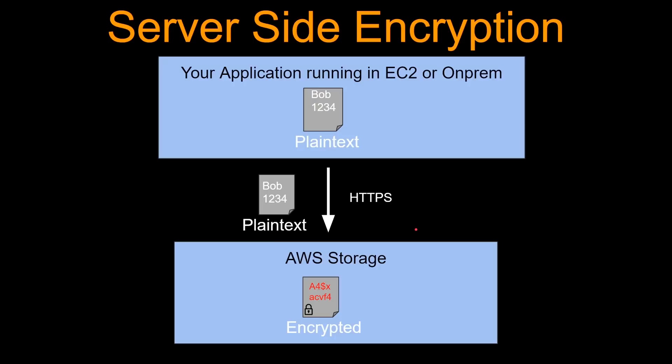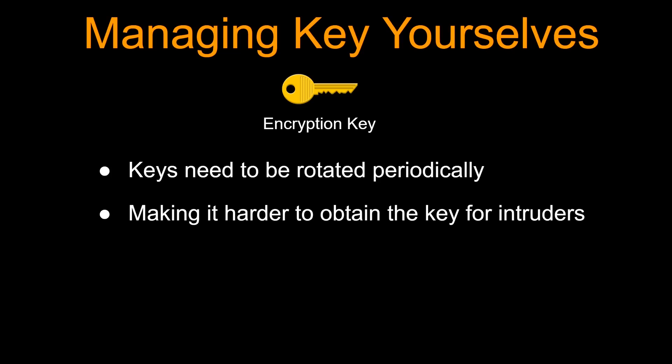Note that there are two states of security: when data is in transit and when data is at rest. In this video we are going to talk about security at rest. Remember the encryption key we used to encrypt the plain text file to the cipher file? This key is really like a house key — if you lose the key, you are in trouble. So in case you manage the key yourself, the keys need to be rotated periodically, so even if the key gets compromised, it reduces the duration and possibility of abuse.